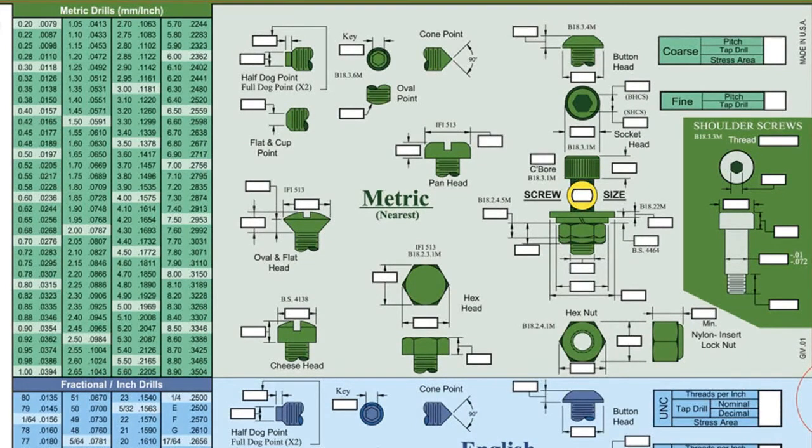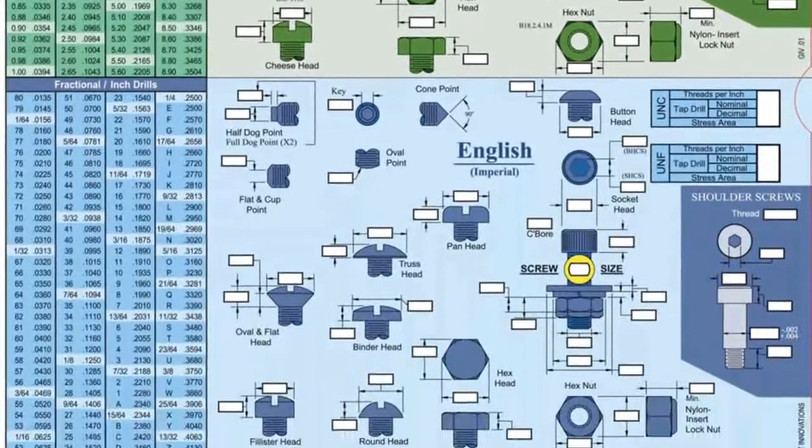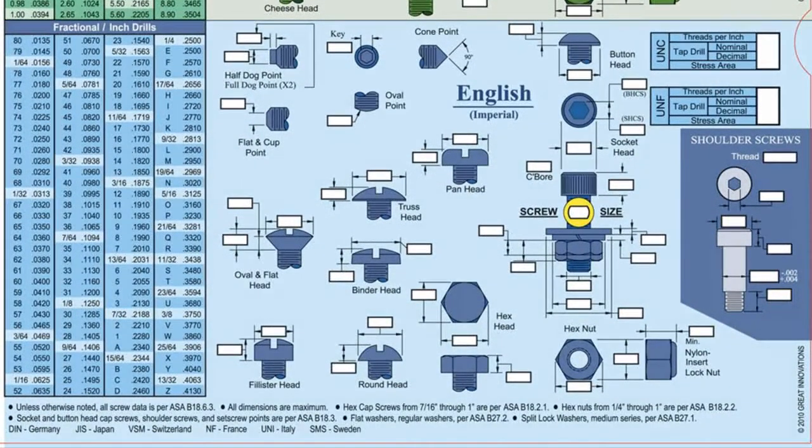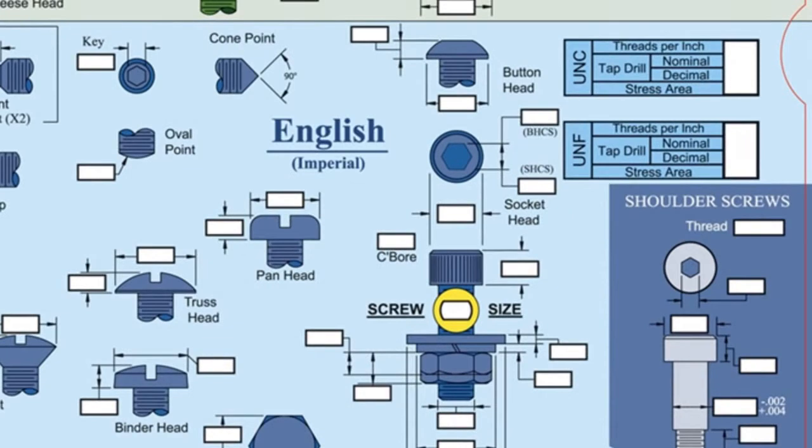Imperial fasteners ranging in size from number 0 to 1 inch are highlighted in blue at the bottom. Tables containing drill, tap, and stress areas for both fine and coarse threads are located in the upper right corner of each section.